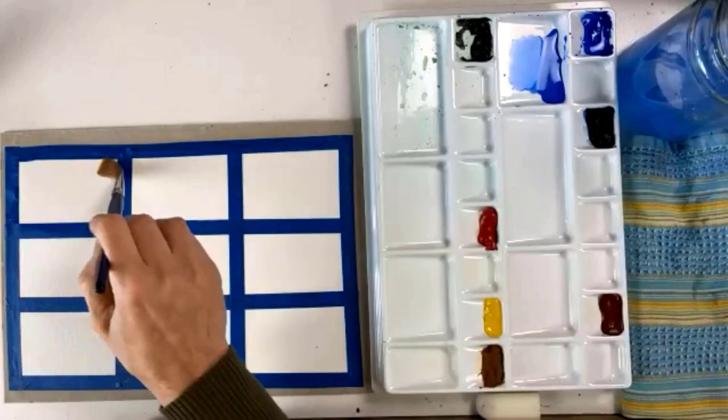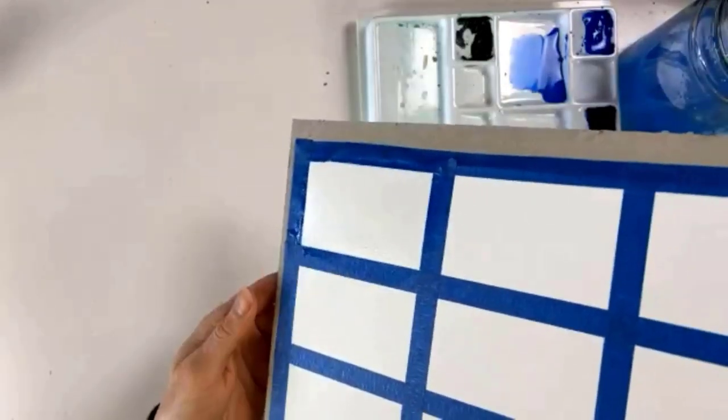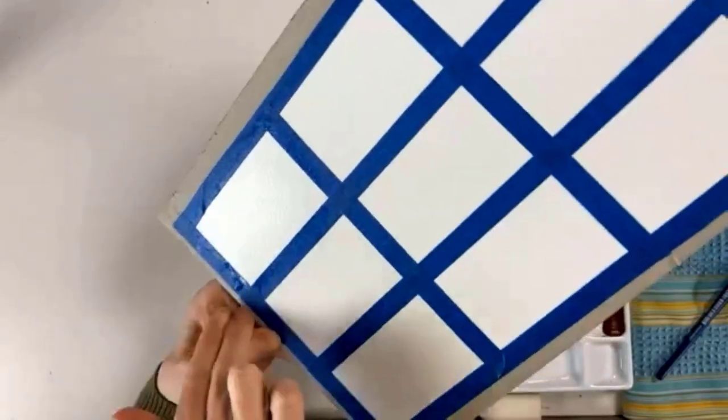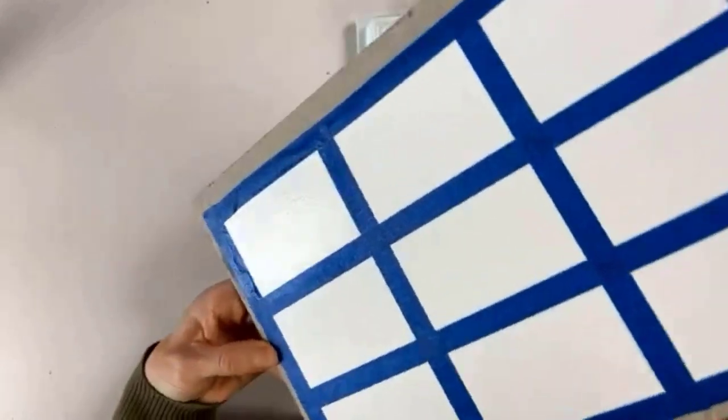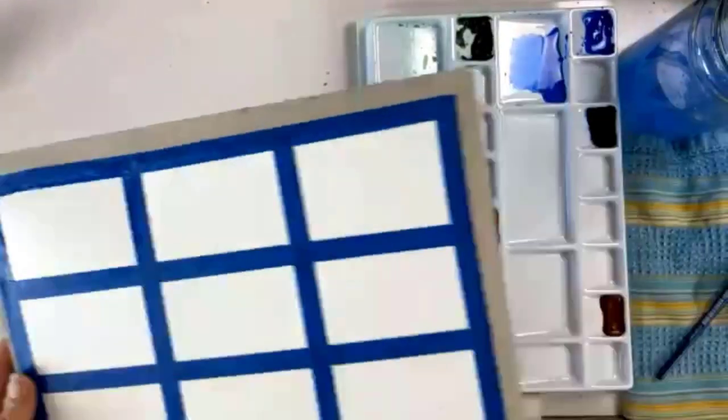If you tip your paper up and water starts to drip off, then it's too wet. You want to take a piece of paper towel and just soak up the extra along the edge so it's not pooling up on your paper at all.